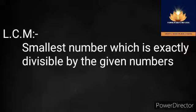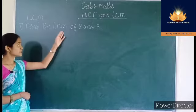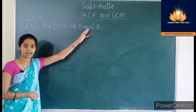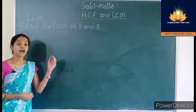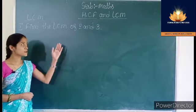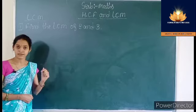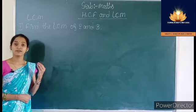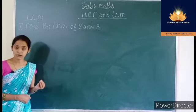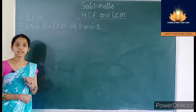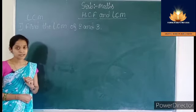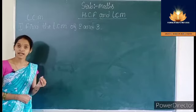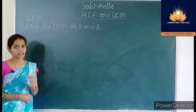To understand these concepts, let us solve some problems. Find the LCM of 2 and 3. To find the LCM of 2 and 3, first we have to find out multiples of 2 and 3, then identify common multiples among them, and then find out the LCM.